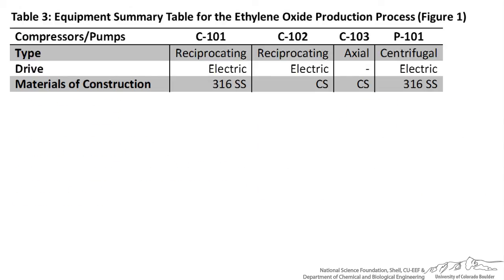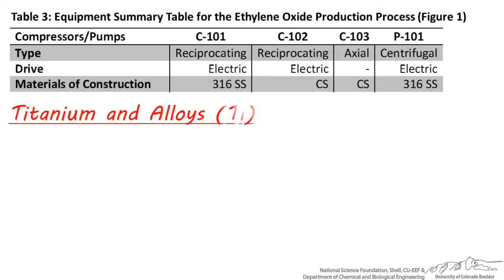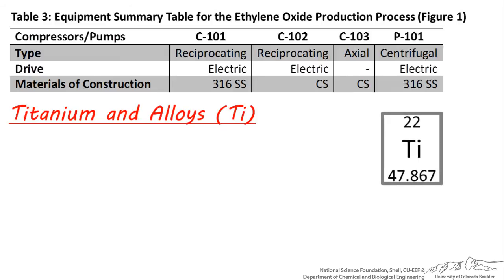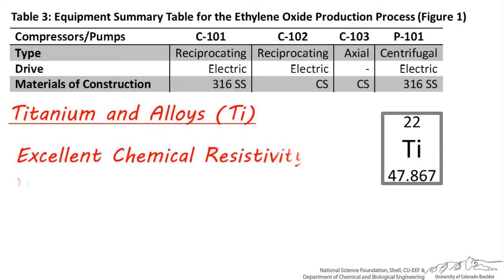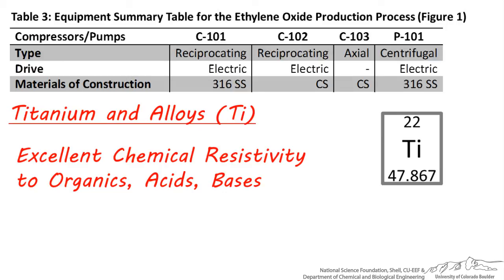Lastly, one of the most expensive materials you can select is Titanium, abbreviated Ti. Its alloys are lightweight and safe to use for almost all organics, acids, and bases, except chemicals like hydrofluoric acid or concentrated sulfuric acid.